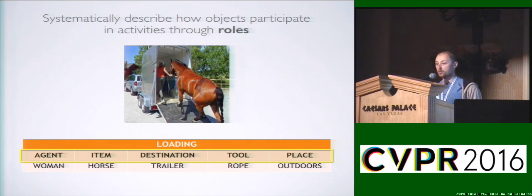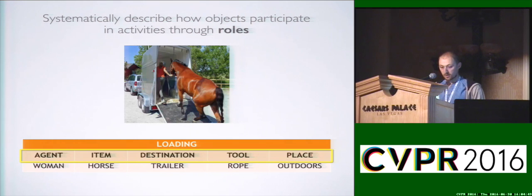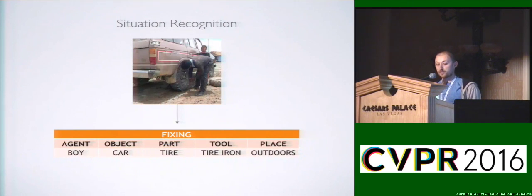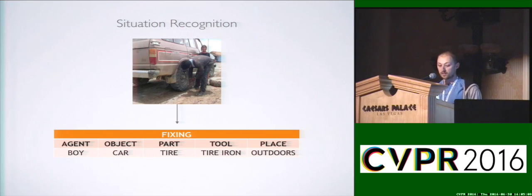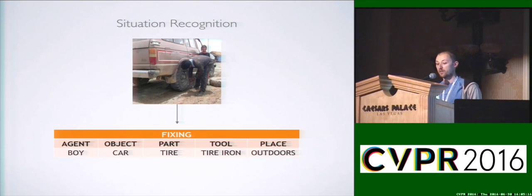This is actually the crucial difference in our proposal compared to any other proposal before. We're going to use roles to systematically model how objects participate in activities. The core contribution of this work is to formulate a problem called situation recognition. Given an image, you produce a structured summary of an activity represented by a verb — for example, fixing — along with a set of objects participating in the activity, such as a car tire, which is the thing being fixed.